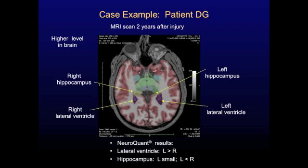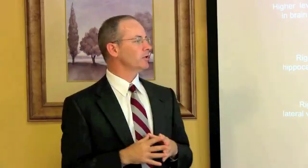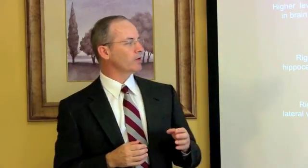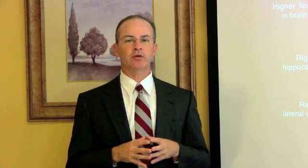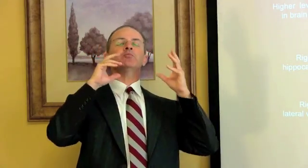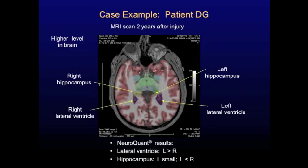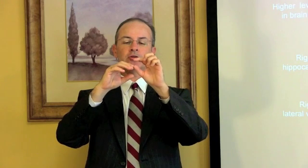This is another NeuroQuant MRI image from the same patient — a different cut through the brain, an axial image. The right side of your screen is the left side of the patient's head, and the left side of your screen is the right side of the patient's head. Again, you see the left lateral ventricle bigger than the right, and the left hippocampus smaller than the right. Recall that when the hippocampus shrinks, the ventricle right next to it gets bigger, so those two things go together.